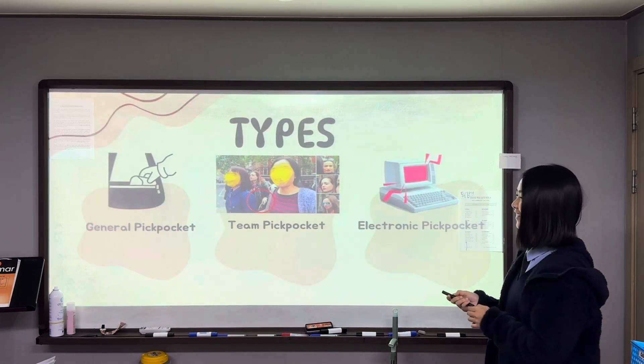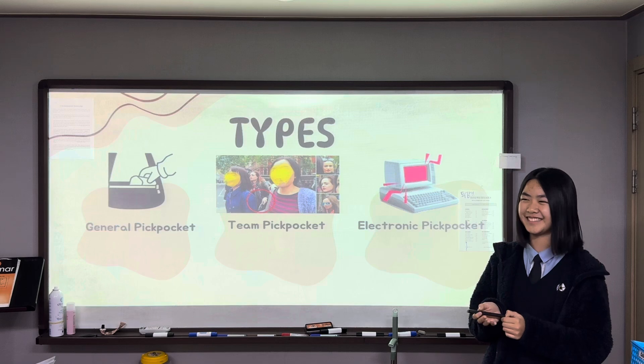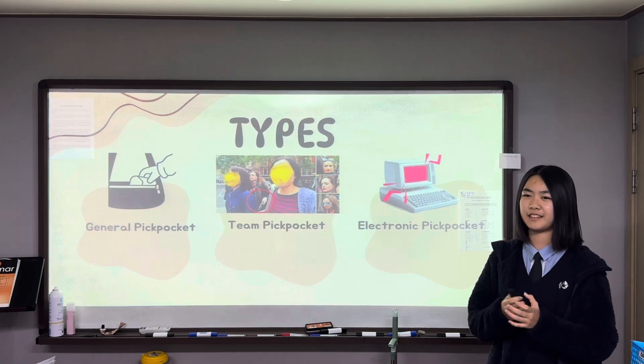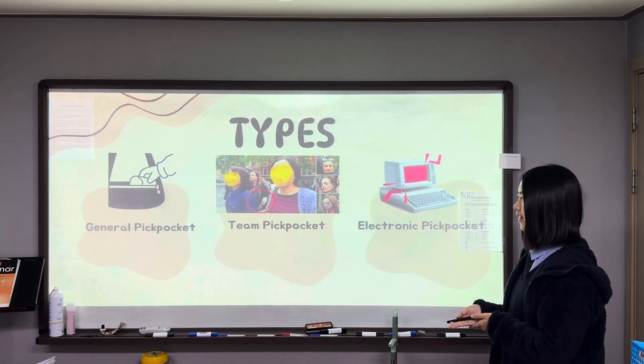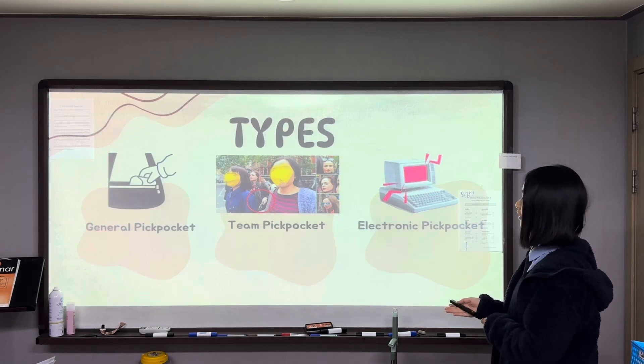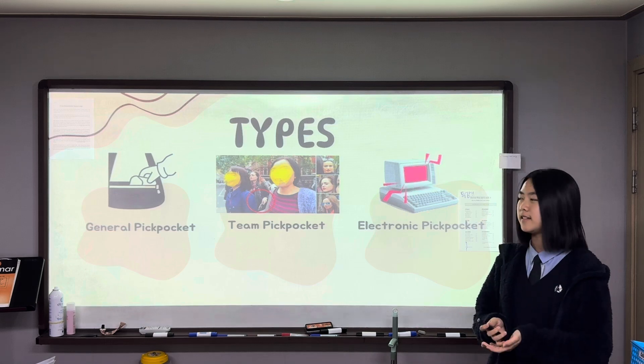Third, the types. There are mainly three types: general pickpocket, unseen pickpocket, and electronic pickpocket.